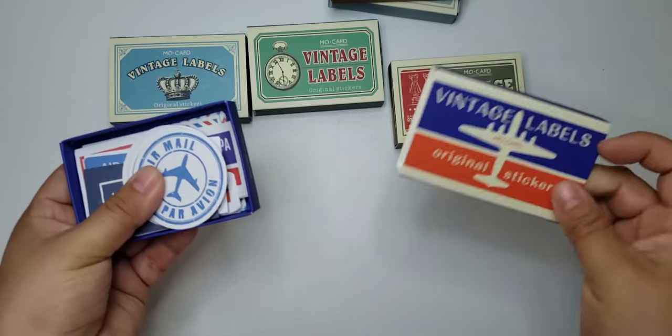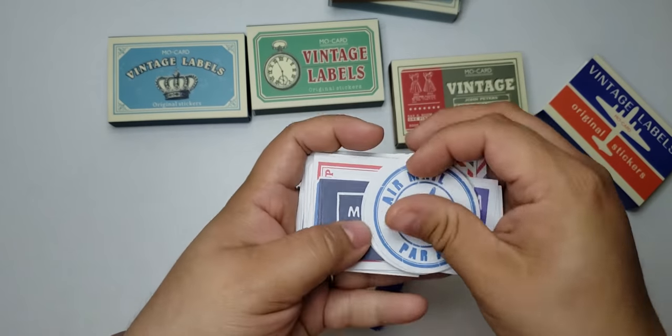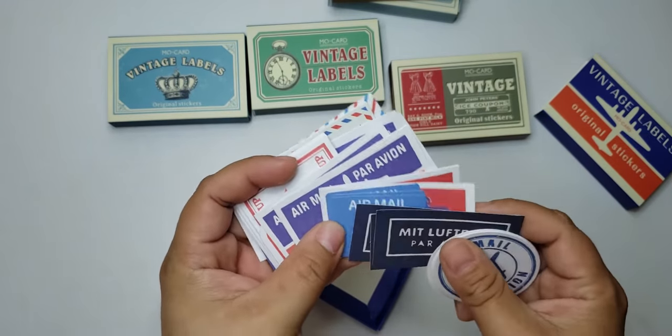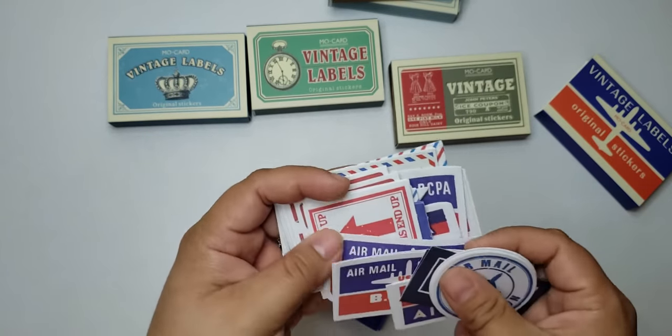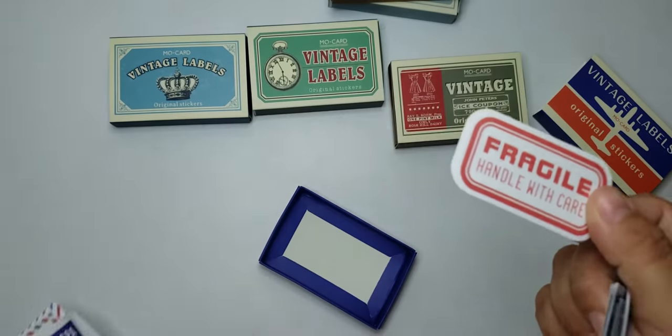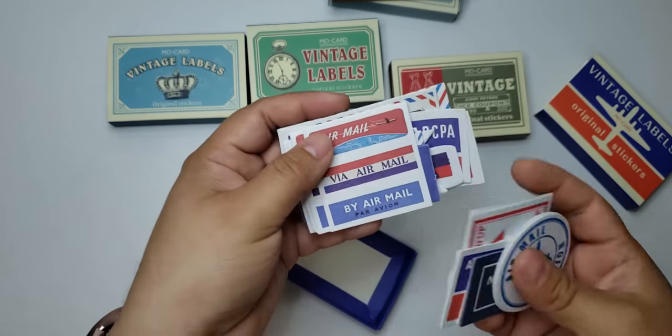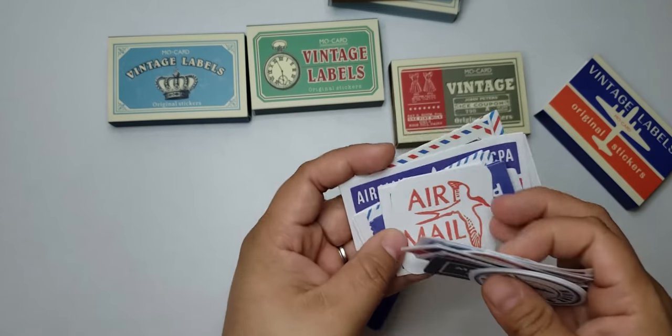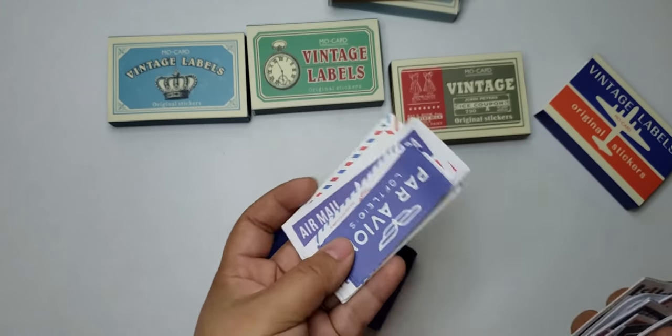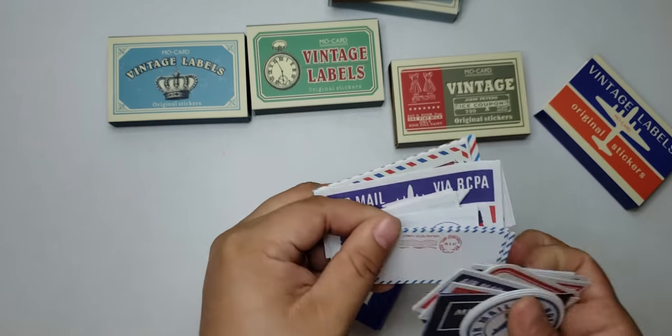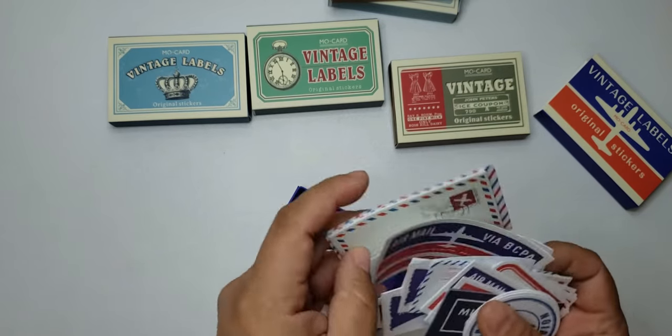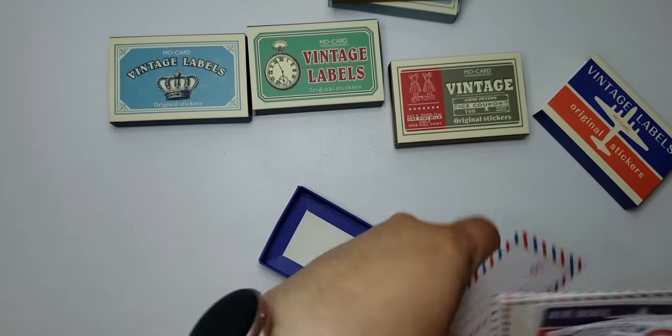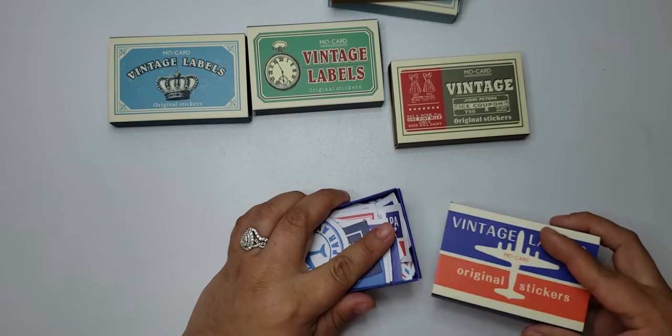This one is vintage labels. All the kind of different things that you would see for traveling. If you happen to have some pen pals, you can always use these stickers to seal up your envelopes. These are just too cute. Look at this envelope. This one has to be my favorite out of all of these.